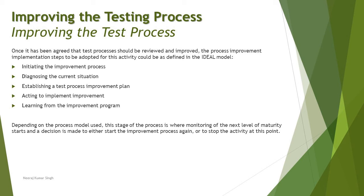Establishing a test process improvement plan means setting up and laying out a plan and roadmap to follow. The list of possible process improvements is prioritized after the assessment report is collected. Prioritization could be based on return on investment, risk, alignment with organizational strategy, or measurable quantitative and qualitative benefits. Having established this priority order, a plan for the delivery of these improvements is then developed.